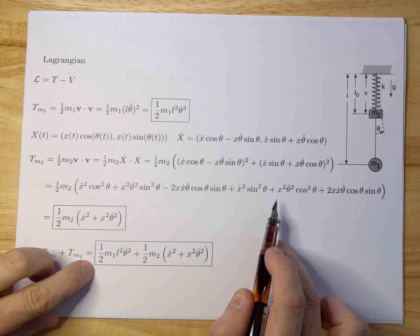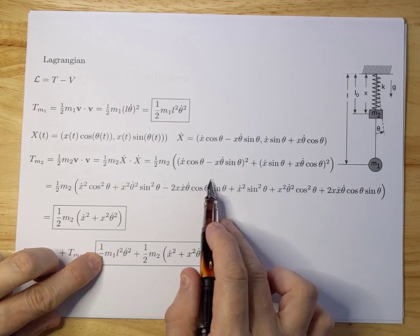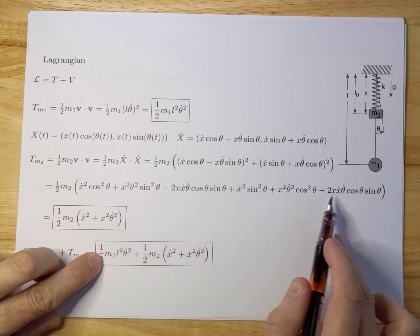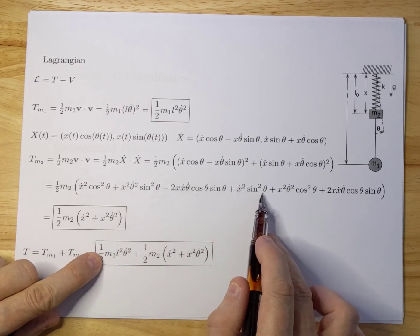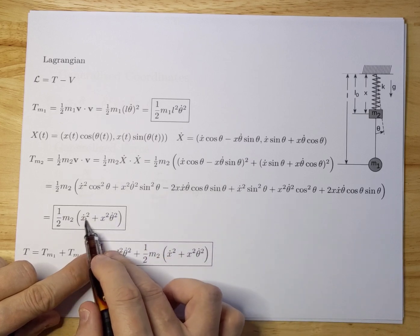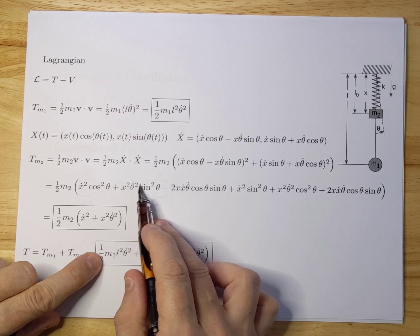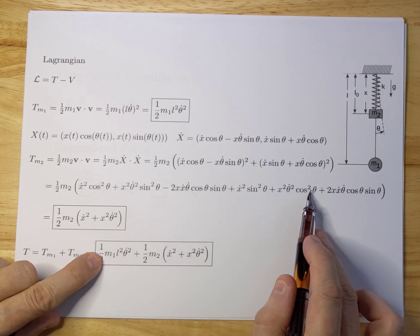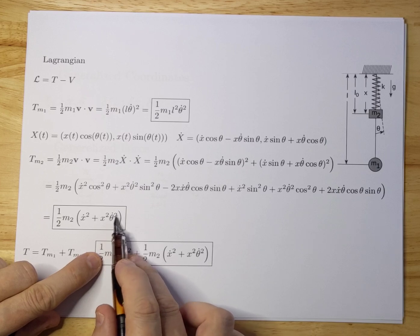There's a lot of stuff that will disappear. Luckily the two difficult ones disappear because there's a minus and a plus. X dot squared has a cosine and a sine squared, so that gives you X dot squared here. Then there's an X squared theta dot squared with a sine and a cosine variant, so that gives you the X squared theta dot squared term.